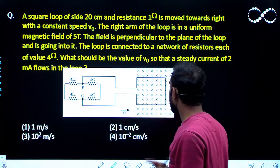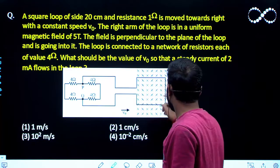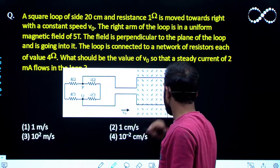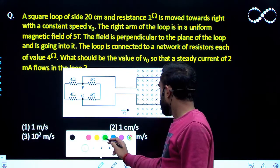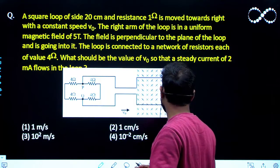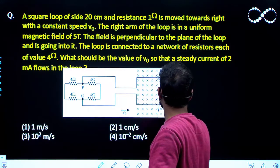If I redraw this, this right arm is going towards right, so this will behave like a cell. I can see here, this will behave like cell since the magnetic field is going in to that direction.